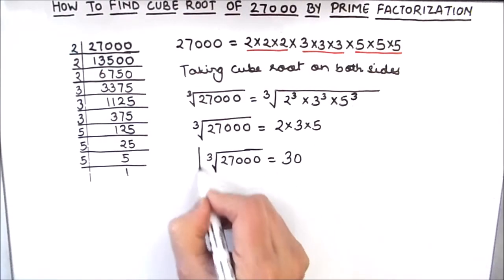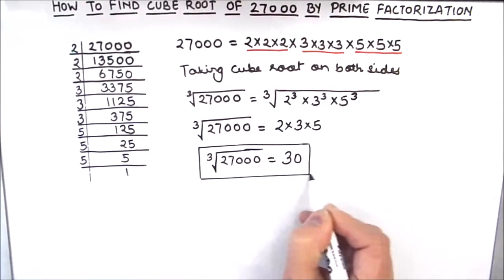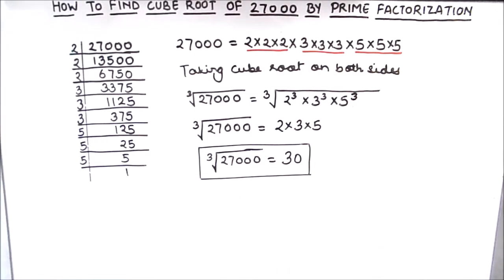So the cube root of 27000 is 30. This is how, by using the prime factorization method, you can find the cube root of any number easily. I hope this video is helpful to you. If you like the video please hit the like button and subscribe to my channel for more math videos. Thanks for watching.